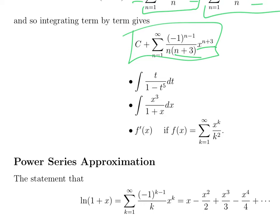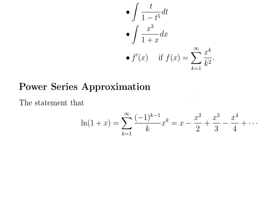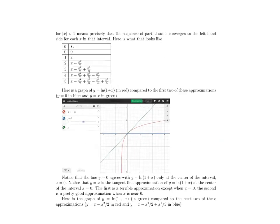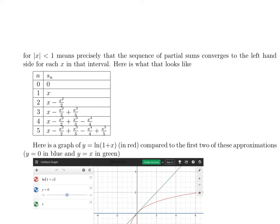I want to show one more thing leading into the next topic. Let's focus on ln(1 plus x), which has the power series x minus x squared over two plus x cubed over three minus x to the fourth over four, and so on. Remember what that means: the partial sums — if you stop the infinite sum at some point, say n equals five — give a polynomial, and the claim is that polynomial is a good approximation of the function. As you take more terms, the polynomials get closer and closer to that function. Let's watch that happen.